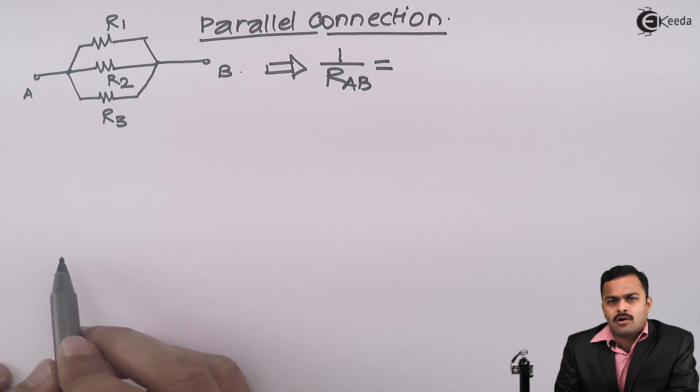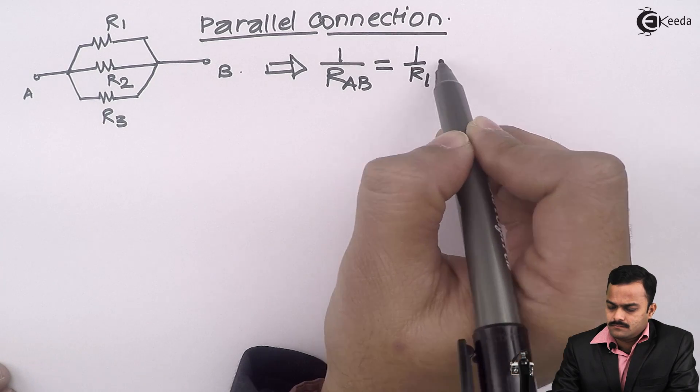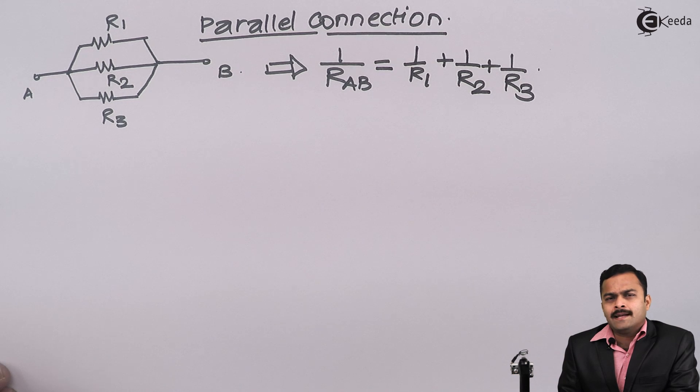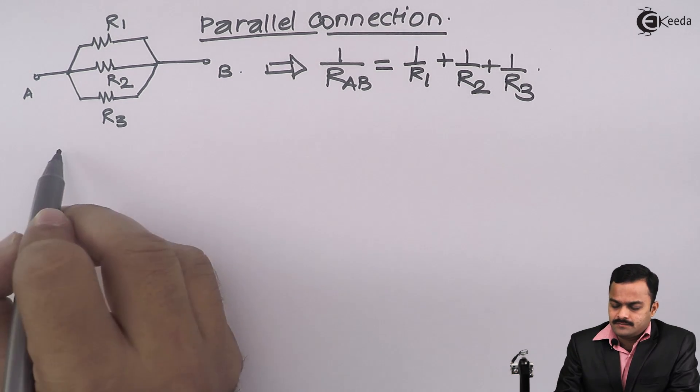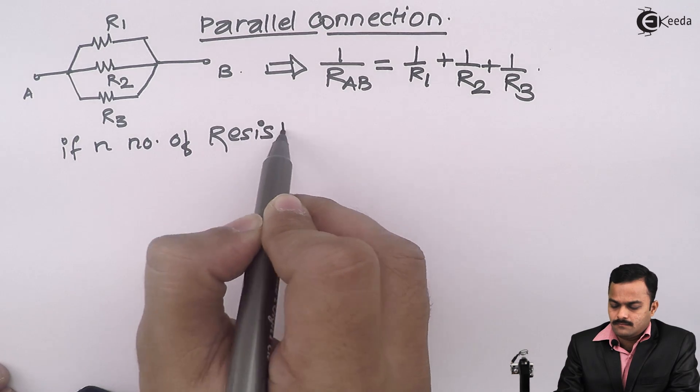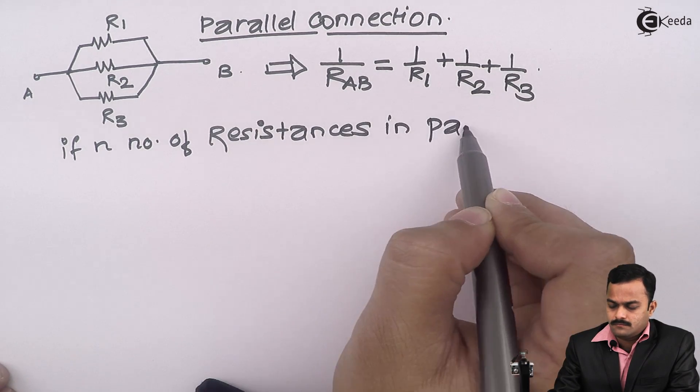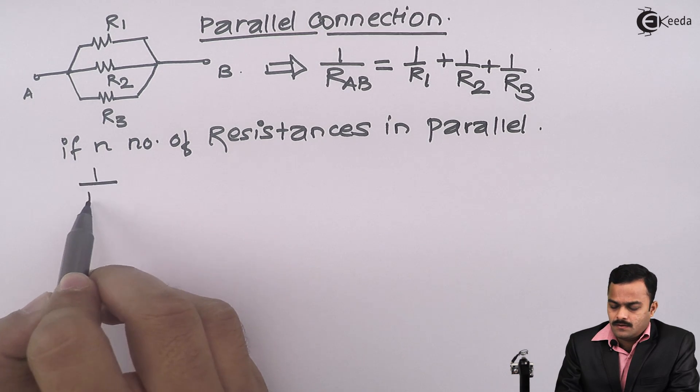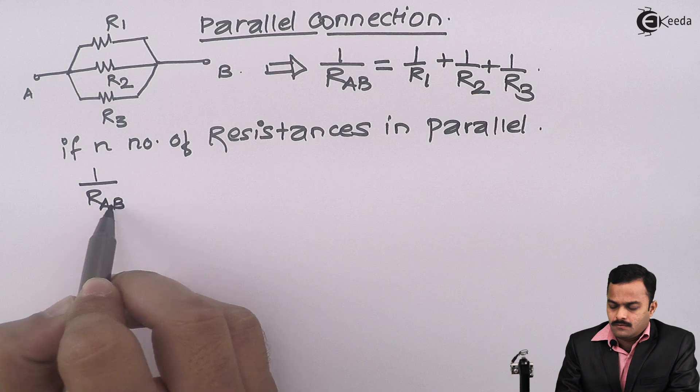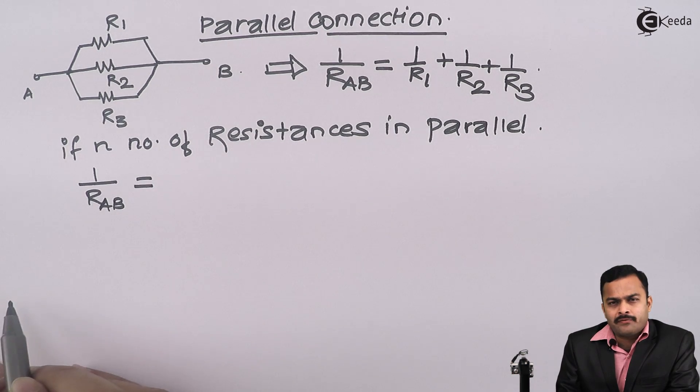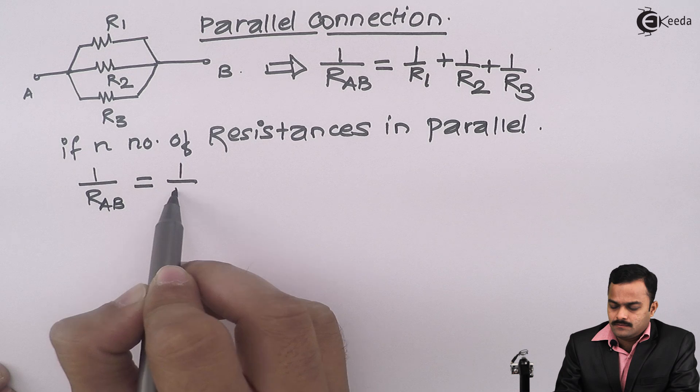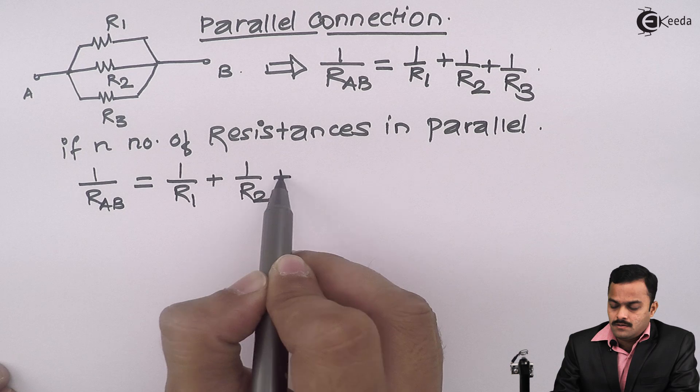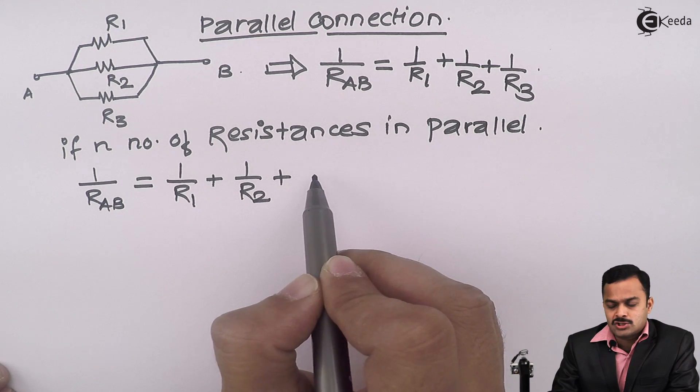of reciprocals of all of them. So suppose I'm having n number of resistors connected in parallel. For this combination, I can say the reciprocal of equivalent resistance will be nothing but the addition of reciprocals of each of them.